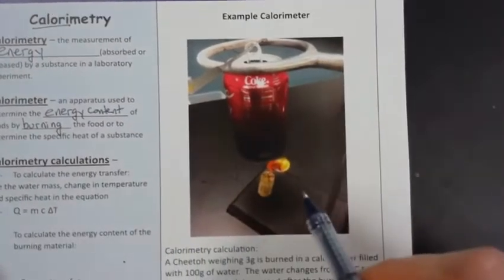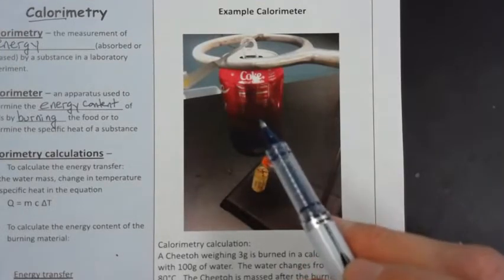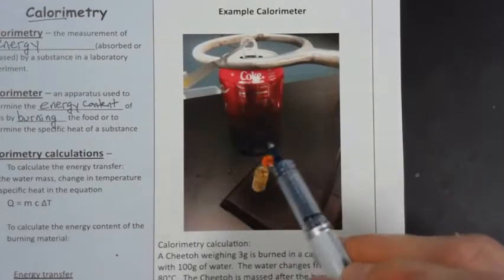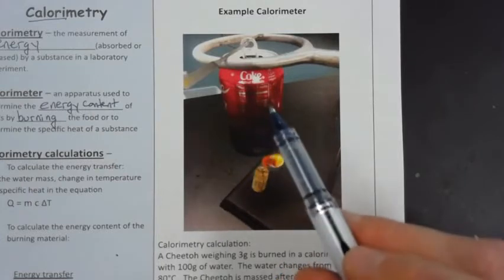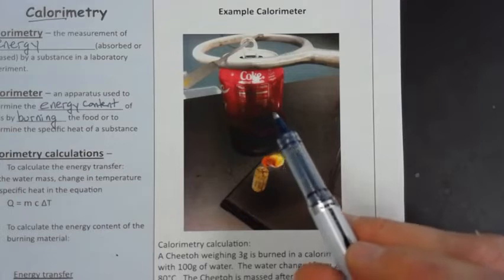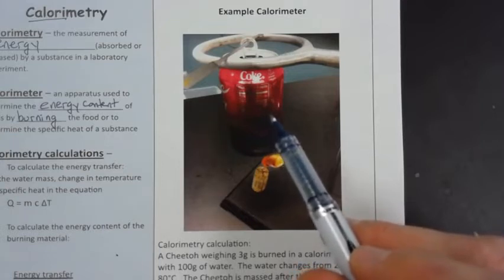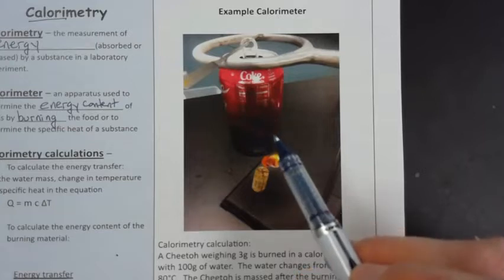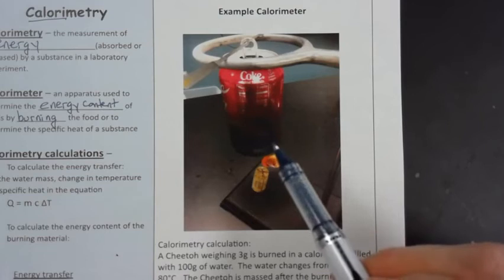An example calorimeter is this image over here. We've got an empty Coca-Cola can that's got a small volume of water poured into the bottom of it. The reason we use a Coke can is because they're cheap - we just pull them out of the recycling bin. And they're thin metal, which means the energy from a nearby reaction can travel through that metal really easily. Metals have low specific heats, so they conduct heat very easily.